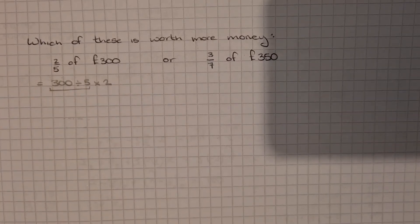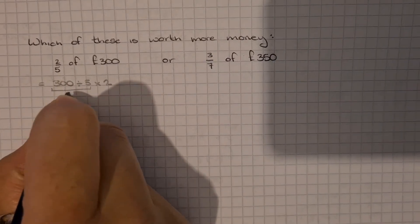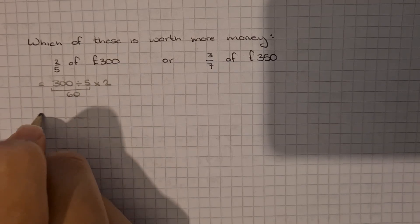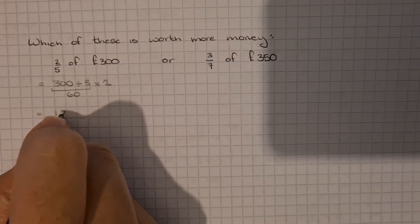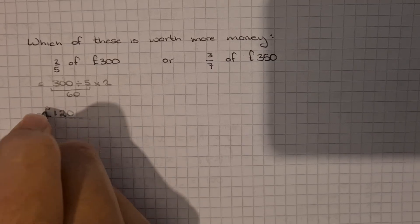300 divided by 5 is 60. So we're going to be doing 60 times 2 which is 120 pounds.